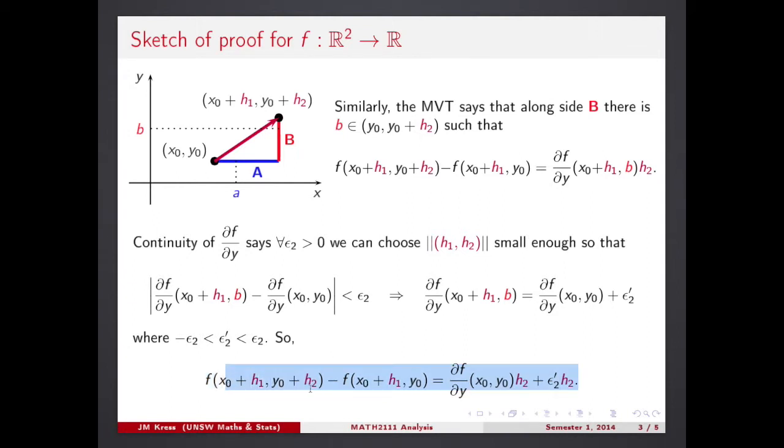Function in the endpoint, function in the original point, some numerical factor times the increment of the argument, which is this time h2, and then minimizing something which pushes even lower, this epsilon 2 dash, times the increment of the argument.